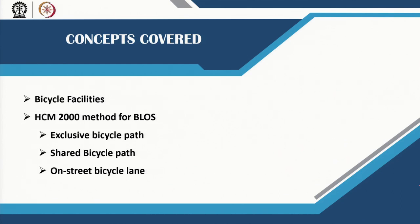This is a slightly older method, but we will expose you to it because of its ease of calculation, so that you understand the concepts. Once you understand them, we might also expose you to the later HCM 2010 method. We are going to cover how to develop level of service for exclusive bicycle paths, for shared bicycle paths, and also for on-street bicycle lanes — the three different categories of bicycle facilities.